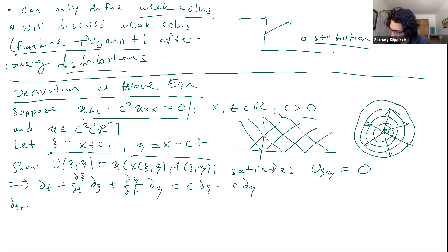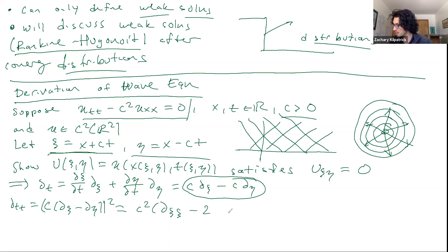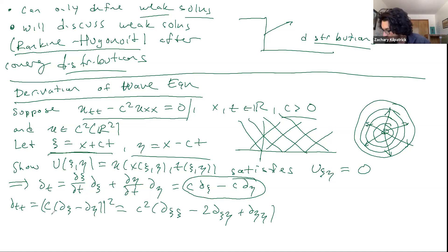What about D_tt? I do the same thing again — I just apply this operator twice. Applying this operator twice gives me (C·∂ψ − C·∂η)², which works out to C² times (∂ψψ − 2∂ψη + ∂ηη). I just apply my differentiation two times and foil it out.